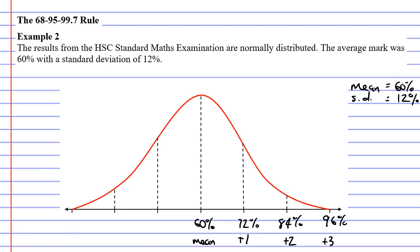This time we are subtracting 12% each time. So 60 minus 12 gives me 48%, because I've subtracted the standard deviation once. If I subtract it a second time, I will get 36%. And if I subtract it a third time, I will get 24%.